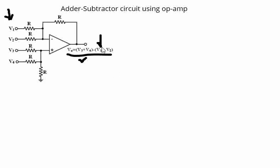Let us try to see how this output is derived, and then we will simulate in LTSpice and compare the output. In network theorem, when there are multiple sources being provided and you have to calculate the output, we consider input sources one by one, calculate the output, then consider another input, calculate the output, and sum all of them.